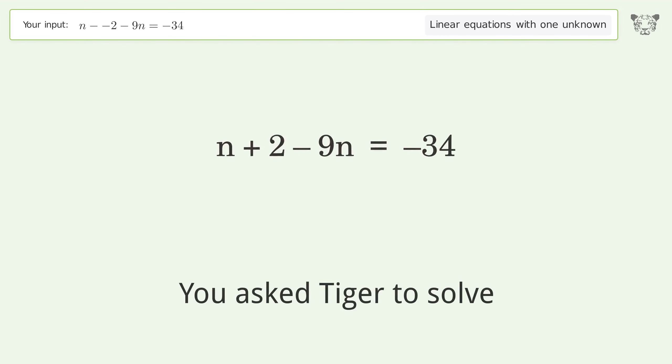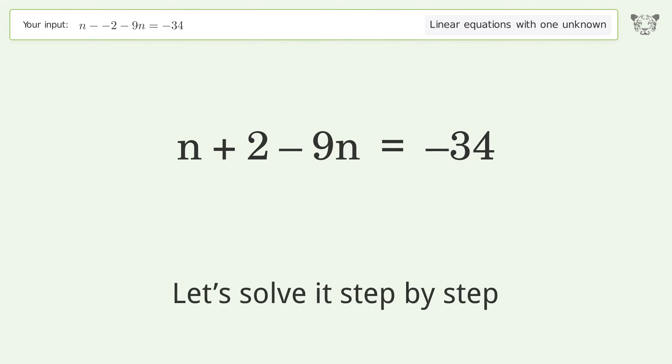You ask Tiger to solve this. This deals with linear equations with one unknown. The final result is n equals 9 over 2. Let's solve it step by step. Simplify the expression.